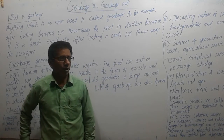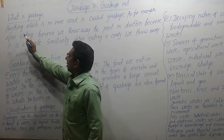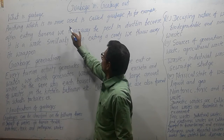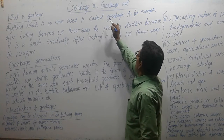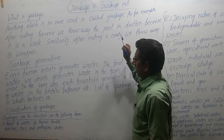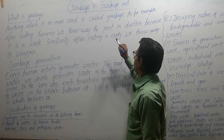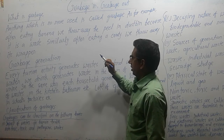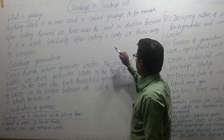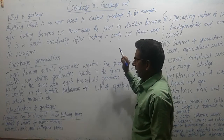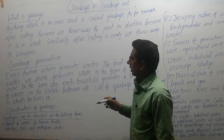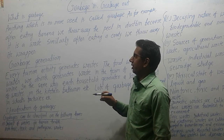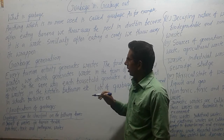First of all, we have to know what is called garbage. What is garbage? Anything which is no more used is called garbage. For example, after eating a banana, we throw away the peel in the dustbin because it is a waste. Similarly, after eating a candy, we throw away its wrapper. That means, if a substance is useless, then it is garbage or waste.